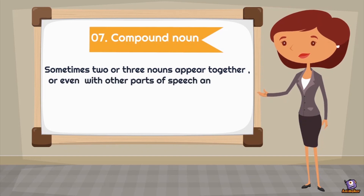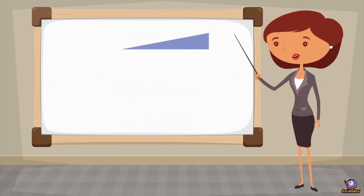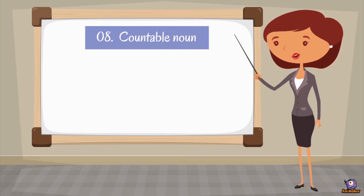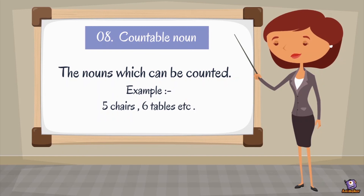Then we have compound noun. Sometimes two or three nouns appear together, even with other parts of speech, to create an idiomatic compound noun. Compound noun woh hote hain jo sometimes do ya more nouns milke banate hain — like 'six pack', 'six-year-old'. Then we have countable noun. As the name suggests, the nouns which can be counted are known as countable nouns. Example: five chairs, six tables, two girls, etc. So these are the eight sub-parts or types of nouns.